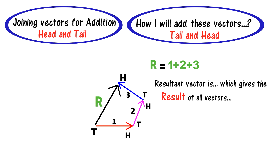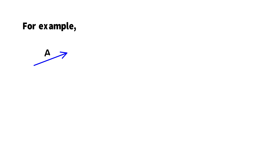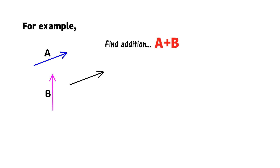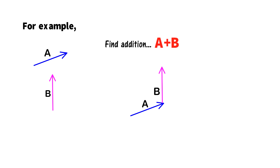For example, if I have two vectors a and b and someone asks me to find a plus b, I will take vector a, then take vector b and join the tail of vector b with the head of vector a. Then I join the tail of vector a with the head of vector b, and this resultant vector gives me the addition a plus b.